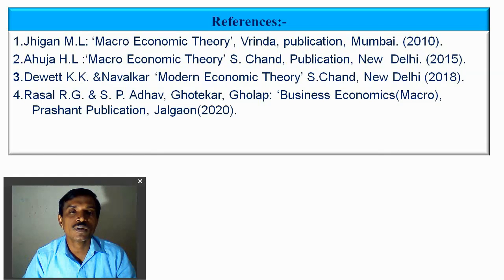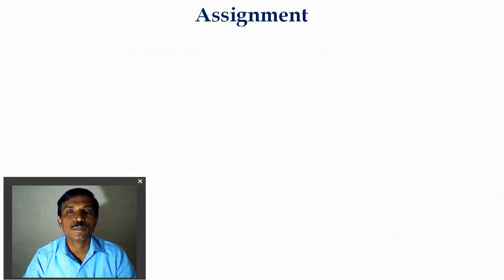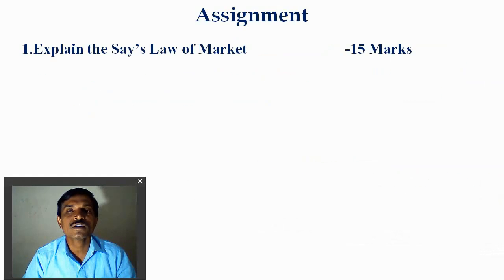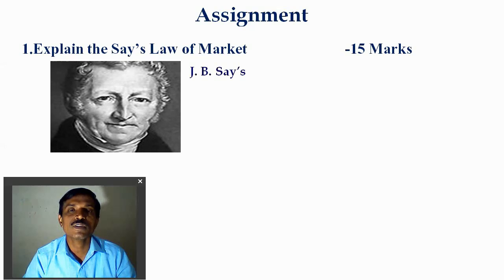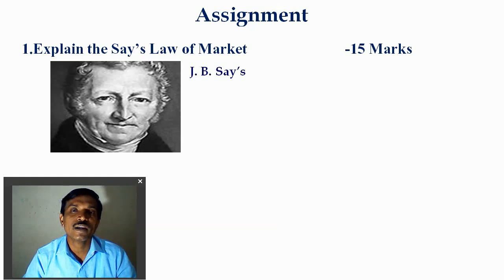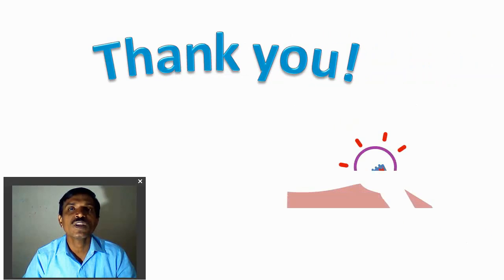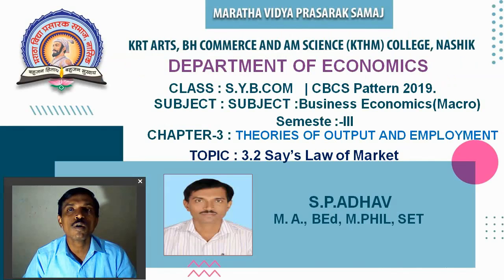You can refer to M.L. Jhingan's Macroeconomic Theory, H.L. Ahuja's Macroeconomic Theory, and other economics books for your study. The assignment question likely to be asked in the examination is: 'Explain Say's Law of Market in detail' — for 15 marks. For J.B. Say's Law of Market, your answer should cover: introduction, the law (every supplier creates its own demand), assumptions, examples, and critics. Thank you for watching this video. Next time we will look at the next point — the Keynesian Theory of Employment. Thank you.